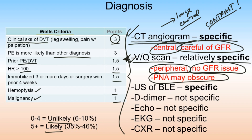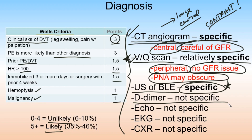Bilateral lower extremity ultrasound is highly specific: a positive result can rule in DVT and suggest pulmonary embolism, but a negative result cannot rule out either. A key advantage is portability — you can bring it to an unstable patient in the ED or ICU without transporting them. D-dimer works in the opposite way: a negative result is very helpful in ruling out clots, but a positive result is non-specific, as inflammation, surgery, and many other things can elevate it.